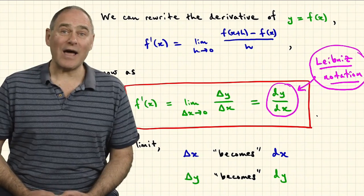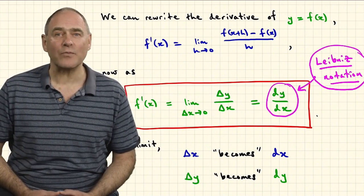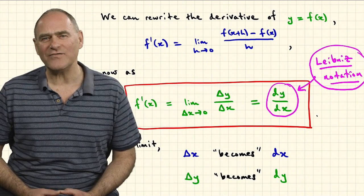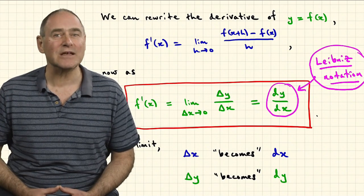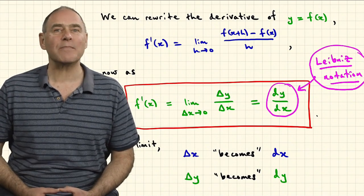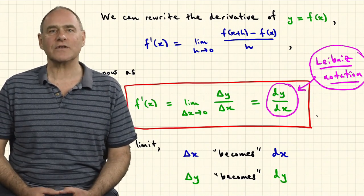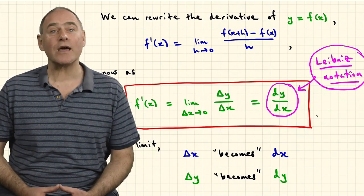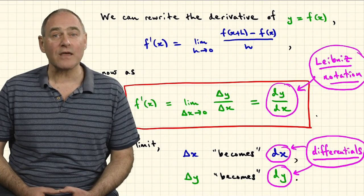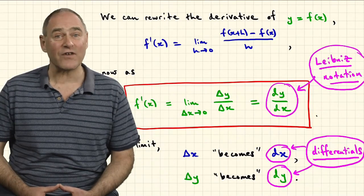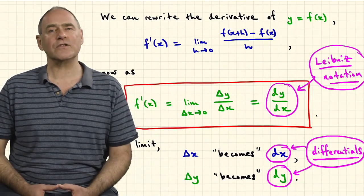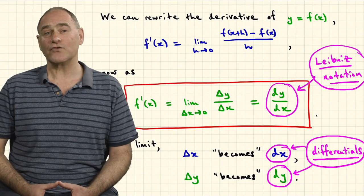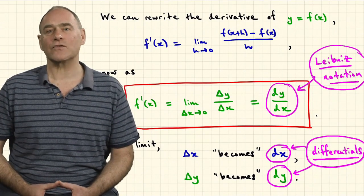Leibniz thought of dx and dy as idealized mathematical objects representing some kind of infinitely small numbers that had their own arithmetic that paralleled the arithmetic of the real numbers. In modern terminology, dx and dy are called differentials. They become very useful heuristic devices, both in applications and also later in the final module when we manipulate integrals.